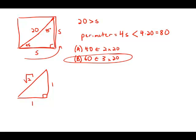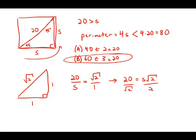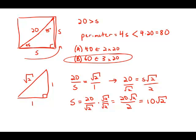I'm going to set up a proportion: 20 over S equals √2 over 1. Cross-multiplying gives me 20 equals S times √2, so S equals 20 over √2. Now I'm going to rationalize — multiply by √2 over √2. In the denominator, that gives me 2. In the numerator, that gives me 20 times √2. Then 20 divided by 2 is just 10, so the side simplifies to 10√2.